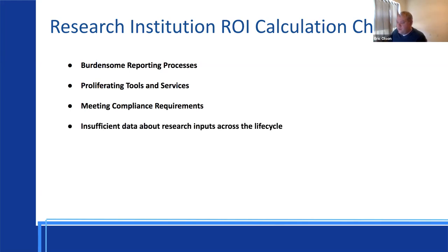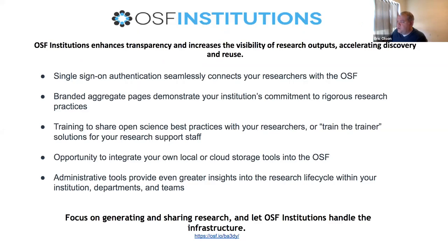There's also insufficient data about what researchers are doing beyond high-line publications, which is very difficult to track, but it's also very important to communicate that your researchers are using best practices and rigorous research practices. OSF institutions is a fee-for-service membership model that provides all of those things. Everything we've looked at today for the researchers is still free for those researchers to sign up for an account — that hasn't changed. But what we want to provide is more insight, more information for the institutions that are supporting those researchers in their work.